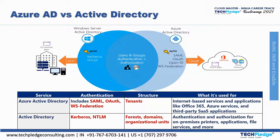In Active Directory, most on-premises apps use lightweight directory access protocols, Windows-integrated authentication like NTLM or Kerberos, or header-based authentication to control access to users. On the other hand, Azure AD can provide access to these types of on-premises apps using the Azure Active Directory application proxy agent running on-premises.